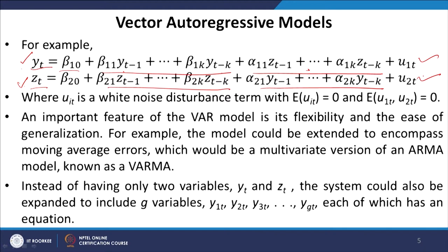An important feature of the VAR model is its flexibility and ease of generalization. For example, the model could be extended to encompass moving average errors as well, giving a multivariate ARMA model known as VARMA. Instead of only two variables, the system can be expanded to include g variables — y1t, y2t, y3t up to ygt — where g can be 3, 4, 5, 10, or any number.